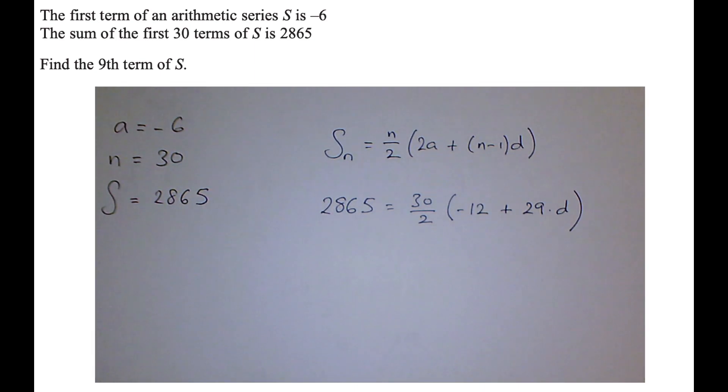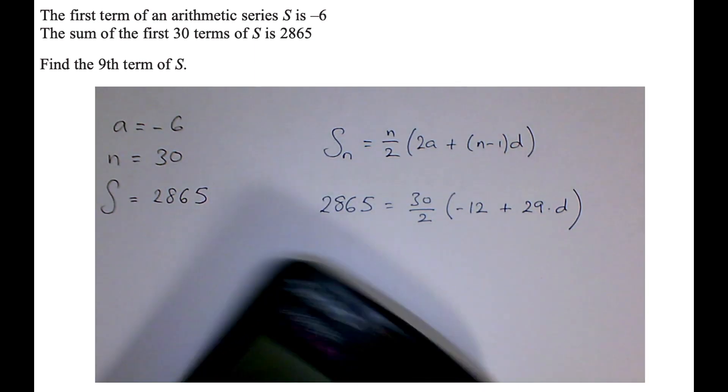Now that looks like an equation I can solve to find D. So if I do 2,865 times it by 2 first, I think, to get rid of that fraction.